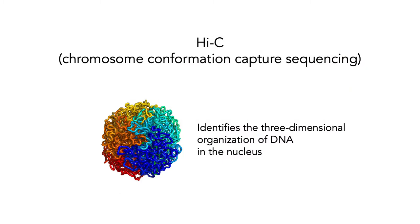Switching to another different case study to emphasize the range of questions you can ask with this data: this is a method called Hi-C, a chromosome conformation capture sequencing method. Basically what we're doing here is trying to identify the three-dimensional context or organization of DNA in the nucleus of a cell.